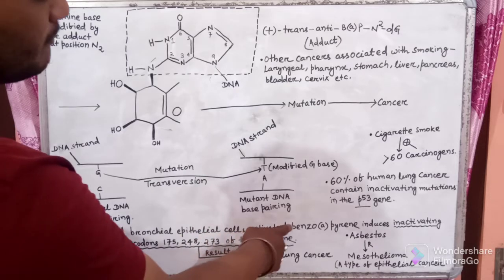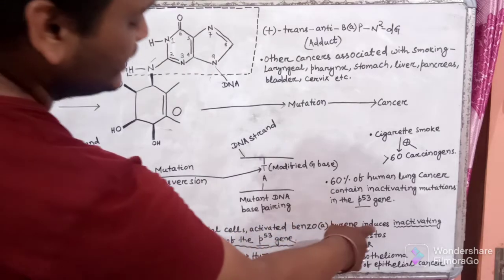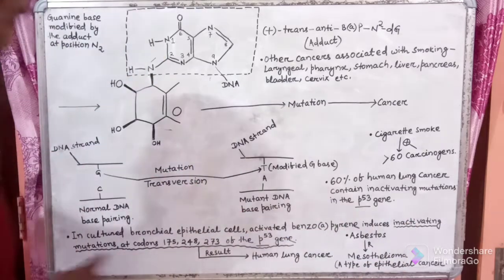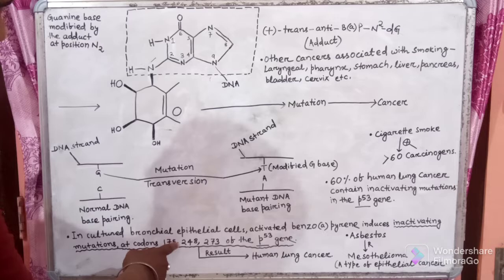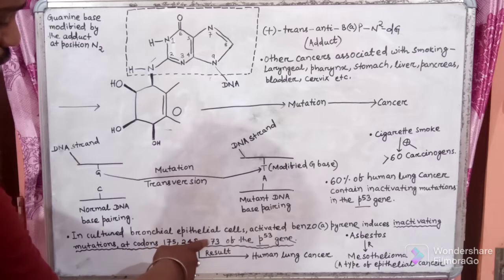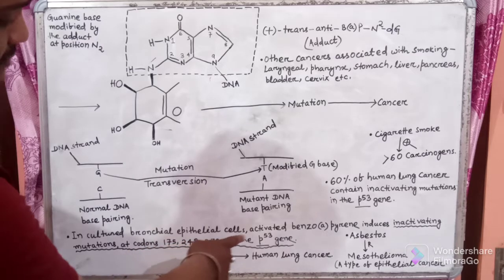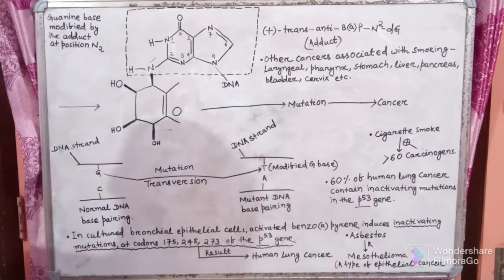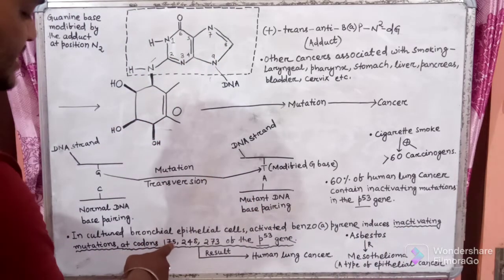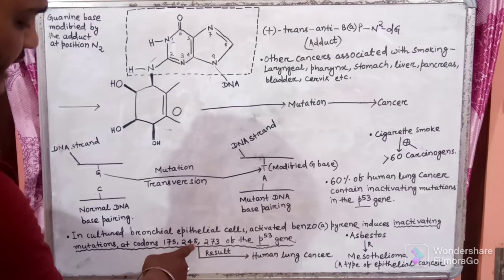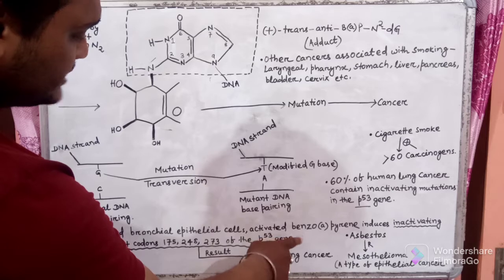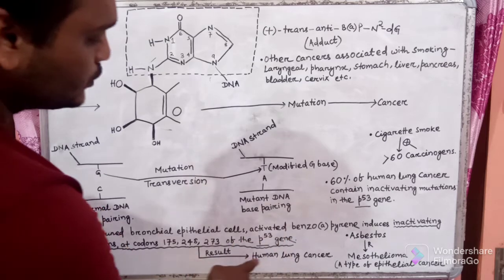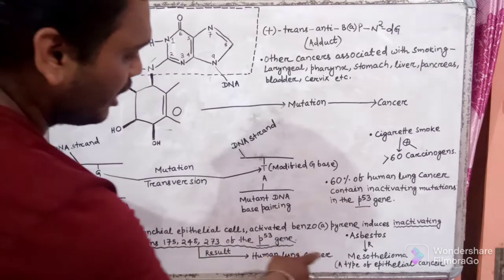In cultured bronchial epithelial cells, the activated Benzo A Pyrene induces inactivating mutations at codons 175, 248, and 273 of the P53 gene. These inactivating mutations at codons 175, 248, and 273 of the P53 gene result in human lung cancer.